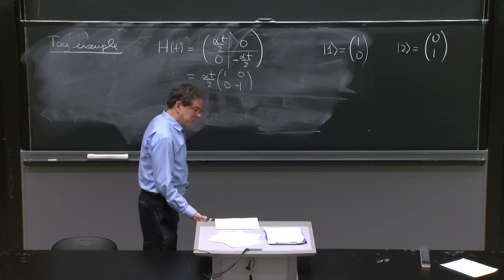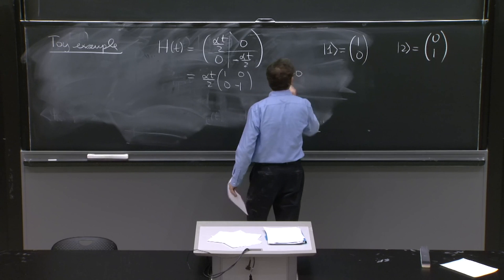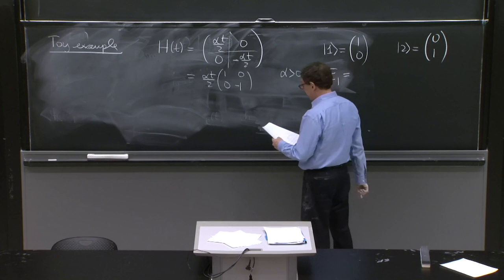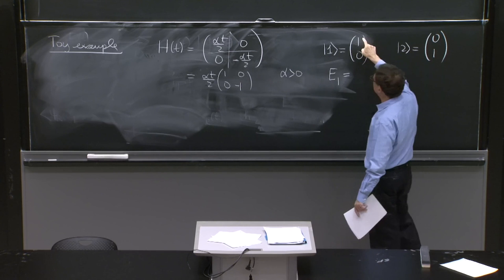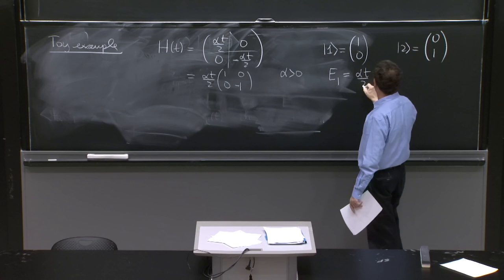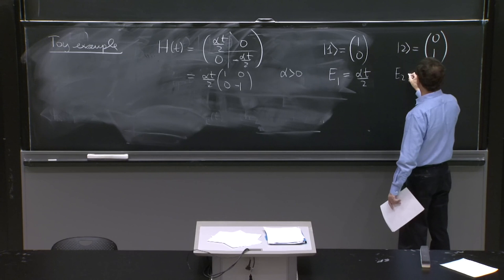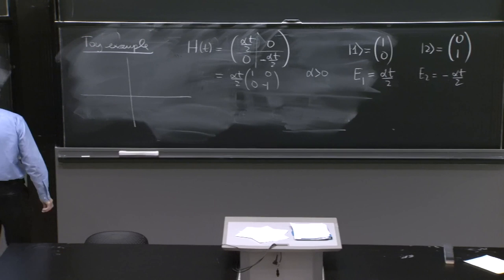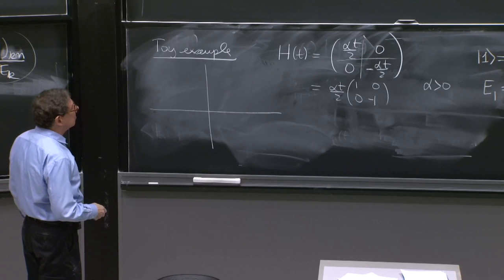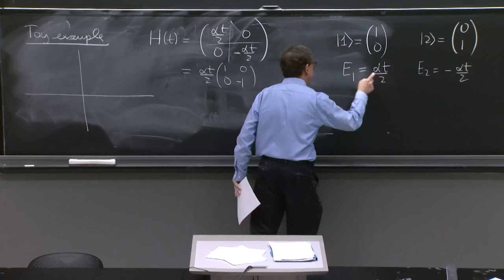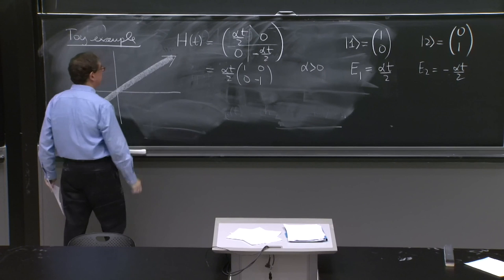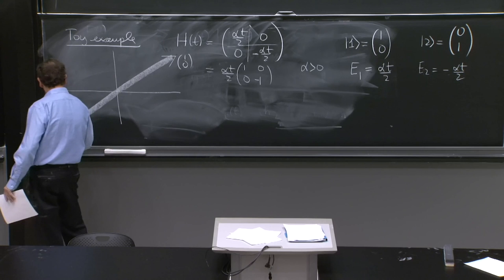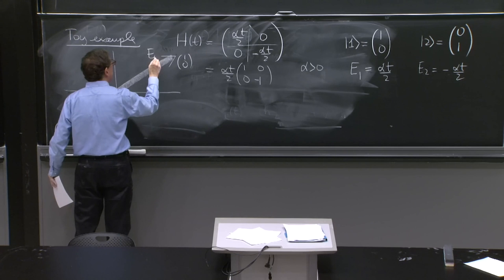To plot this, I will assume from now on that α is positive. The energy of the first state is, what do you get when you act with Hamiltonian on this state? The matrix gives you the state back, and this is just αt over 2. And the energy of the second state is going to be minus αt over 2. We can plot those energies. And here is the energy of the first state is αt over 2. With α positive, this is like this.